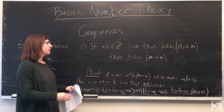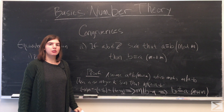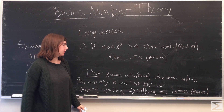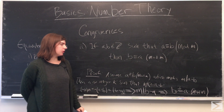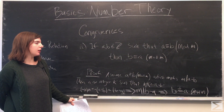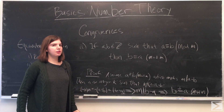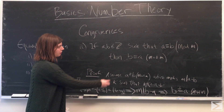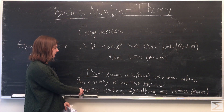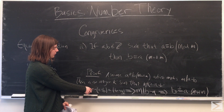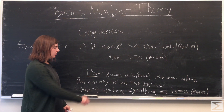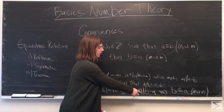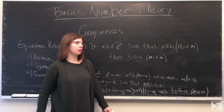The symmetric property says that if A and B are integers such that A is congruent to B modulo M, then B is congruent to A modulo M. For the proof, if we assume A is congruent to B modulo M, that implies M divides A minus B, so there's an integer k such that Mk equals A minus B. Multiplying both sides by negative 1, we get M times negative k equals B minus A, which says M divides B minus A, meaning B is congruent to A modulo M.